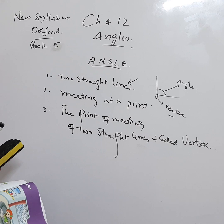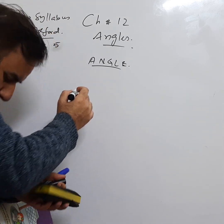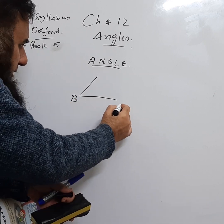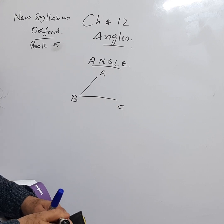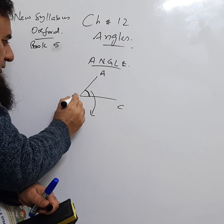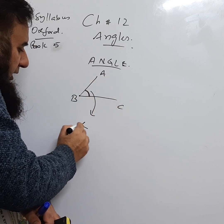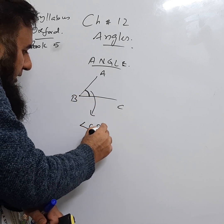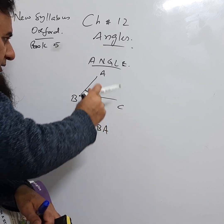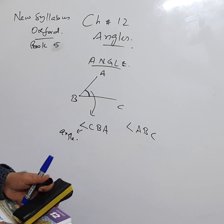Now, how to name an angle. If these are two straight lines meeting at point B, and this is C and this is A, we can name this angle in different ways. The vertex must always be in the middle. If we start from C, we say angle CBA — B is in the middle. If we start from A, we say angle ABC — again B is in the middle.